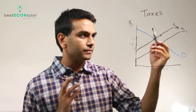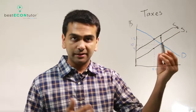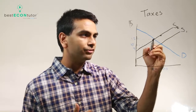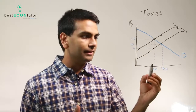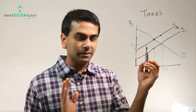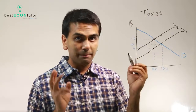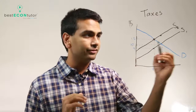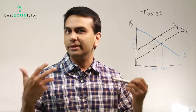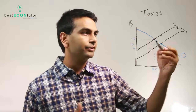Notice that the new supply curve is parallel to the old supply curve. The new intersection between supply and demand is at (80, 12). One important thing to notice here is that the equilibrium price didn't go up by the full three dollars — it went from ten up to twelve. So it was only a two dollar increase in price when the tax was three dollars.